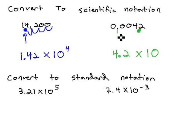...we actually want to divide by 10, 1, 2, 3 times. To make it dividing by 10, we use a negative exponent, representing a small value of 0.0042.